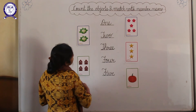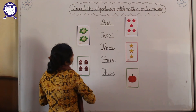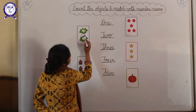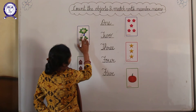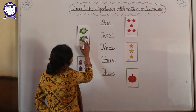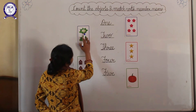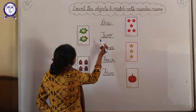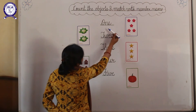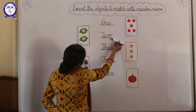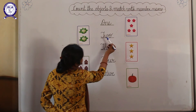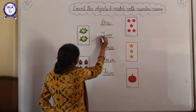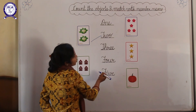Now beta, match the number name with pictures. Look here beta. How many cauliflowers are there? 1, 2. And where is the spelling of 2? Here. And match with 2.